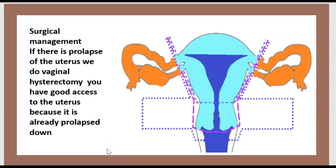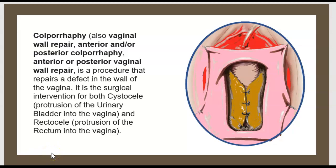Surgical management: if there is prolapse of the uterus, a vaginal hysterectomy is performed — good access is provided because the uterus is already prolapsed down. Colporrhaphy, also known as vaginal wall repair (anterior and posterior), repairs a defect in the wall of the vagina. It is the surgical intervention for both cystocele — protrusion of the urinary bladder into the vagina — and rectocele — protrusion of the rectum into the vagina.